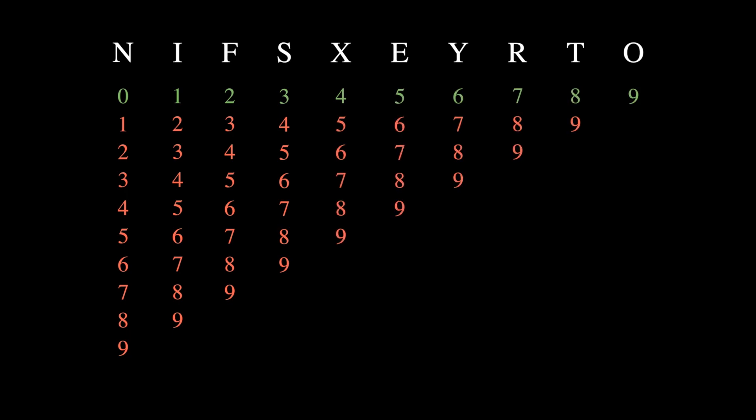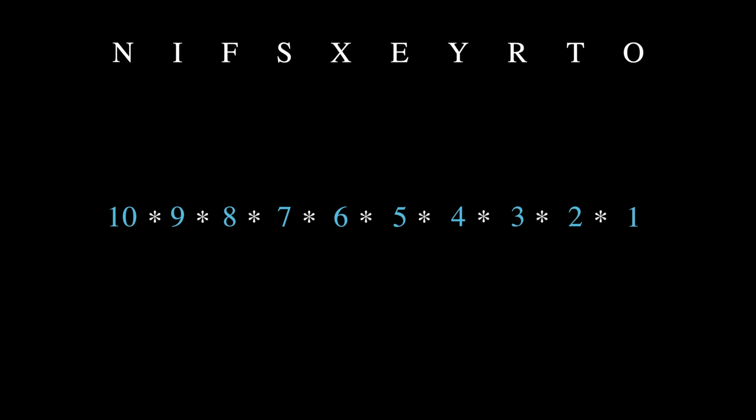Let's consider the possible choices for each letter, one at a time. For N, we have 10 choices of digits to assign it to. We know from the solution that the correct digit is 0, so I've highlighted it in green. Once we pick a digit for N, we have 9 remaining digits that we can assign to I. Similarly, we have 8 digits for F, 7 for S, and so on. We can get the total number of permutations by multiplying the number of choices at each step, like so. This number, 10 times 9 times 8 times everything to 1 is also called 10 factorial. That's a big number.